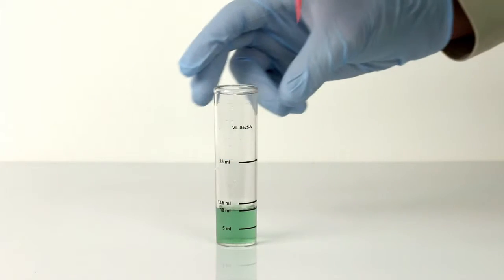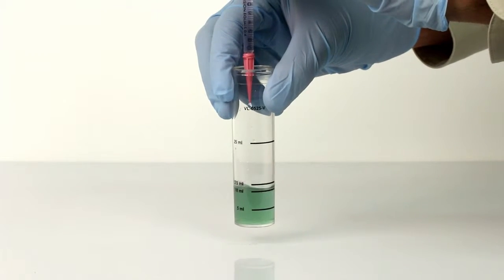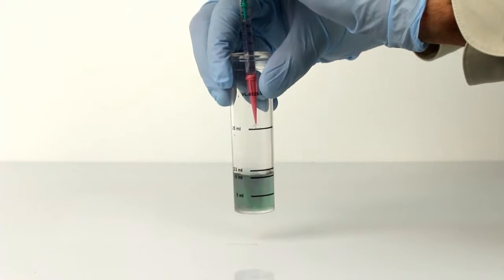Using the syringe, add OP titrant to the sample. Swirl the vial as you slowly dispense the titrant from the syringe.